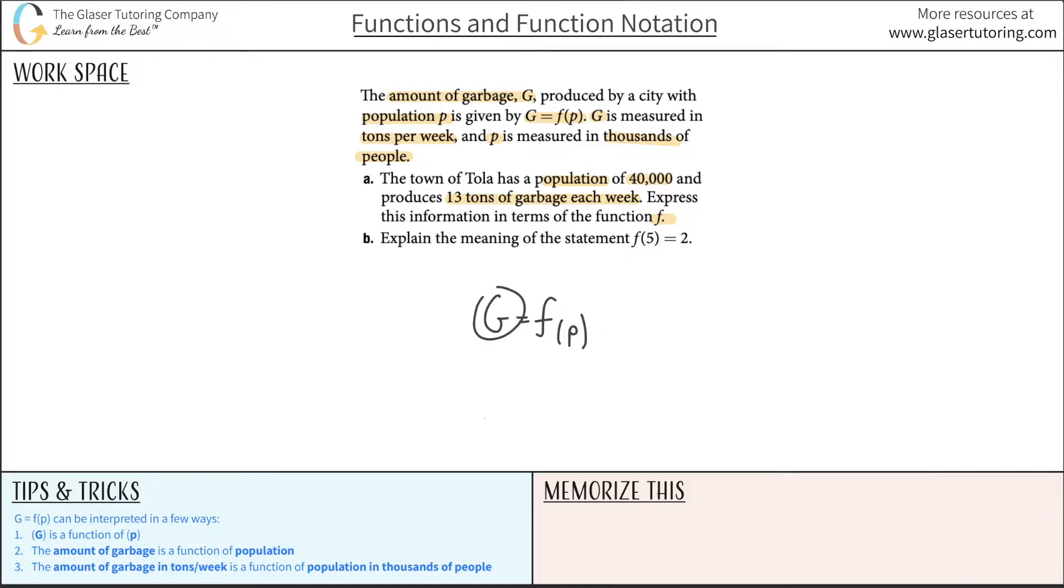But what the heck is G? What the heck is P? These are just letters, so let's give it a little richer context. Now I can say that G, since it represents the amount of garbage, I can say that the amount of garbage is a function of population.